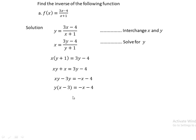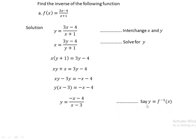Since our aim is to find the value of y, we factor out y from the left side, giving y(x - 3) = -x - 4. Dividing both sides by (x - 3), we get y = (-x - 4)/(x - 3). Finally, we write y as f inverse of x, so f⁻¹(x) = (-x - 4)/(x - 3).